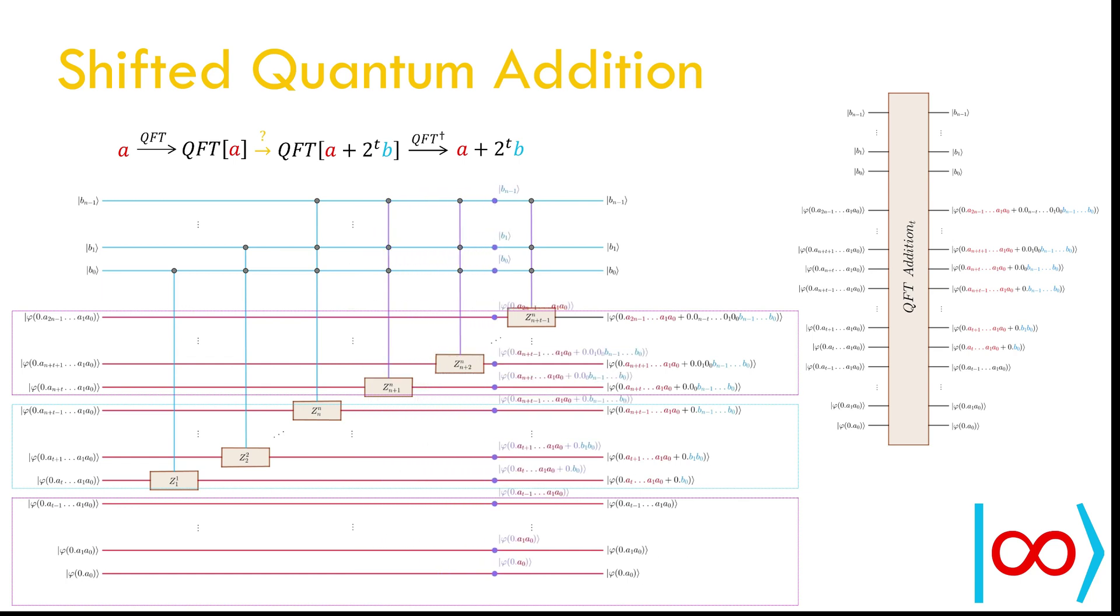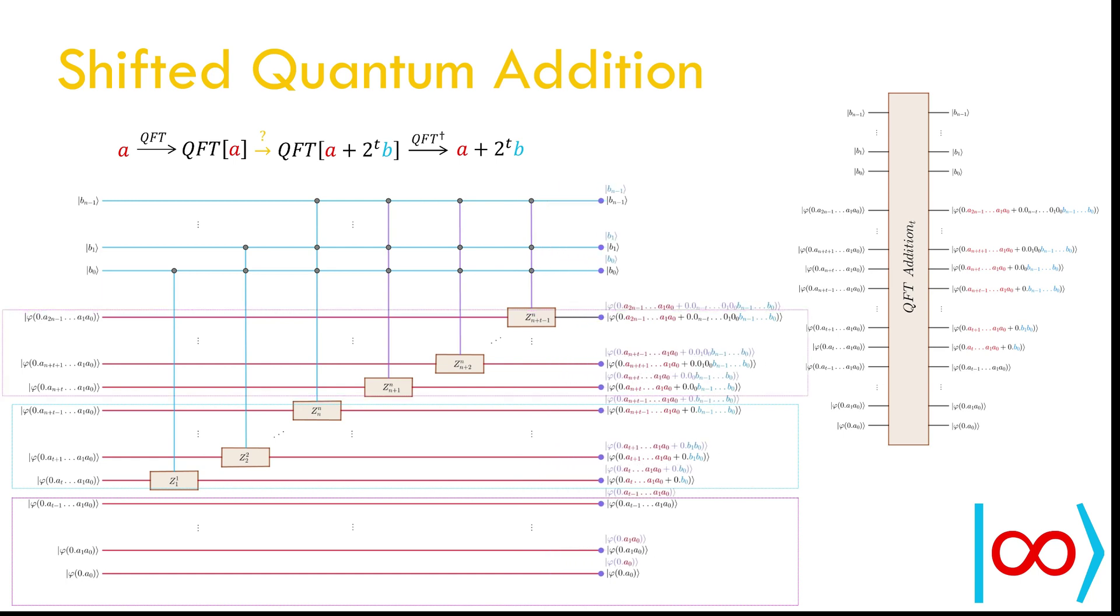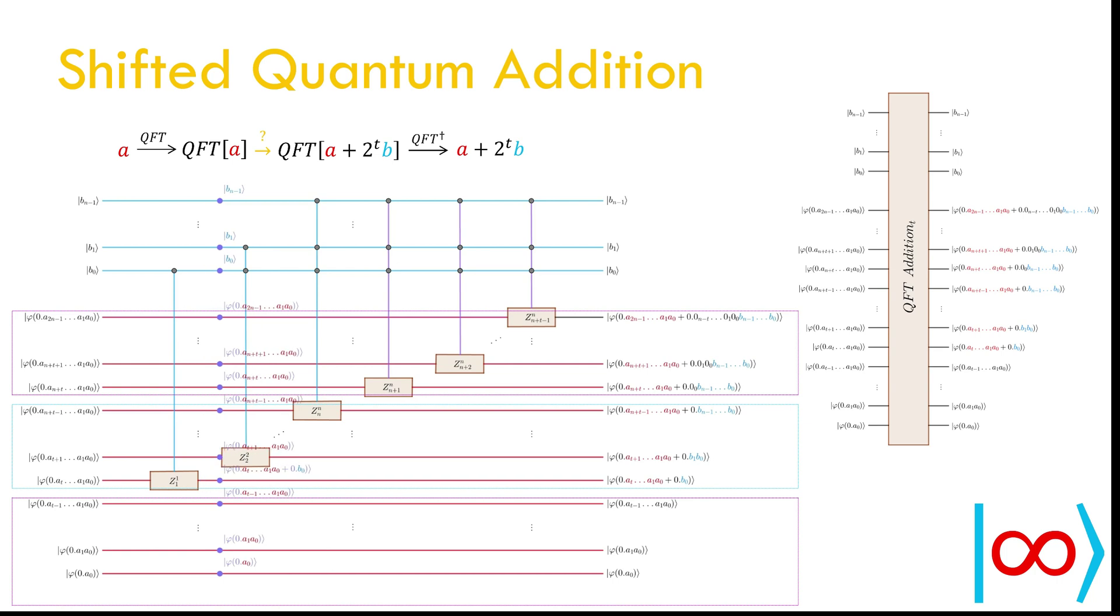We start with the Fourier transformed qubits of A and qubits of B. The last t qubits of the input are not modified. Next n qubits are transformed as in usual addition. The last 10 minus t qubits are rotated by shifted powers controlled by all qubits of B. At this point inverse Fourier transform will give the sum. But this is not what we want.